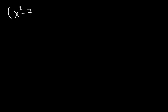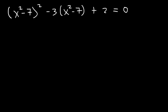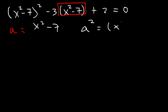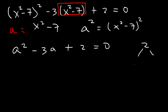Let's try one more example: x squared minus 7, that quantity squared, minus 3 times x squared minus 7 plus 2, equals 0. We're going to set the middle part equal to a. So a equals x squared minus 7, which means a squared equals x squared minus 7, that quantity squared. What we have is a squared minus 3a plus 2. Two numbers that multiply to 2 but add to negative 3 are negative 2 and negative 1, so it factors as a minus 2 times a minus 1.